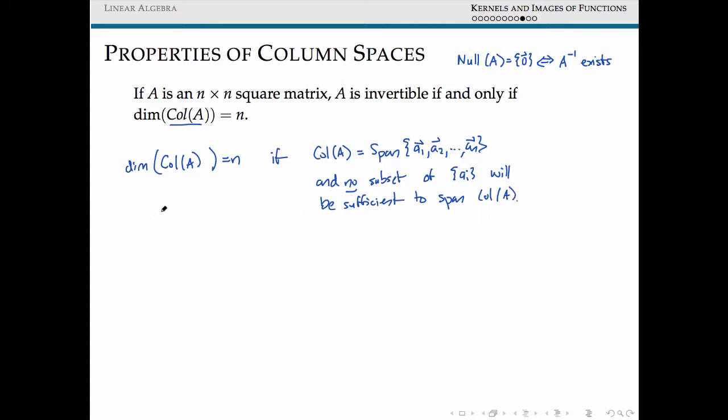An alternate way of phrasing this is the column space of A is equal to n if and only if A is row equivalent to the identity matrix, which we already know that this is one of our invertible matrix theorem conditions to say that A is invertible.